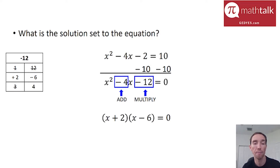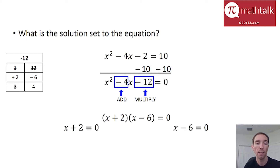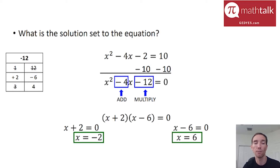I'm just multiplying those two quantities together. If any one of them equals 0, then the whole equation equals 0. So I split it into two separate equations and solve each: x plus 2 equals 0, and x minus 6 equals 0. I subtract 2 from the first and add 6 to the second. That gives me x equals negative 2 and x equals 6. And there's my solution set to this equation.